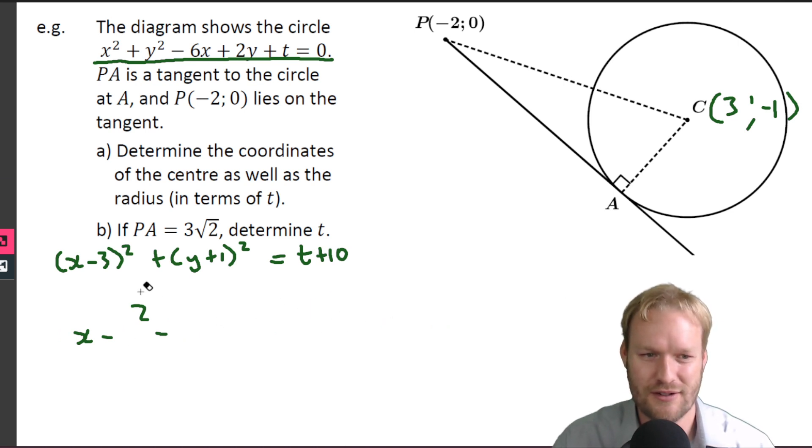There aren't any axes to clog up our diagram, we can fill in the coordinates and not have to worry about them. Okay, so there's C, which means we can work out the distance PC quite easily, right? Also, we know that the radius here, well the radius here is t. That's radius squared, so that must be square root of t plus 10.